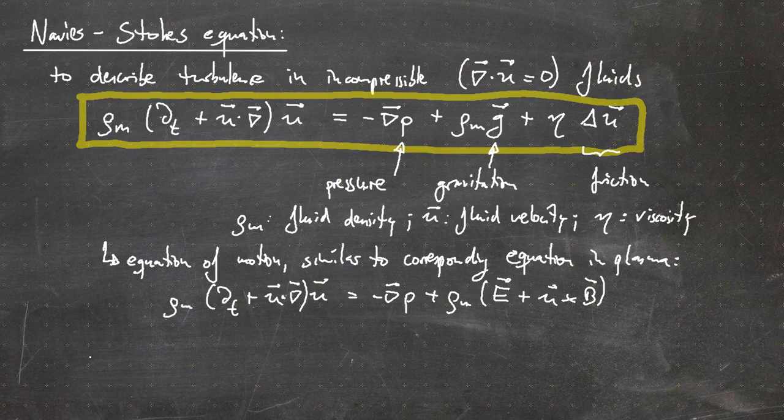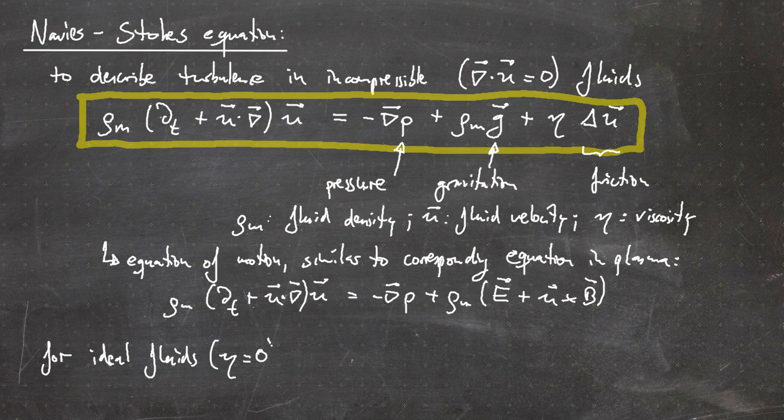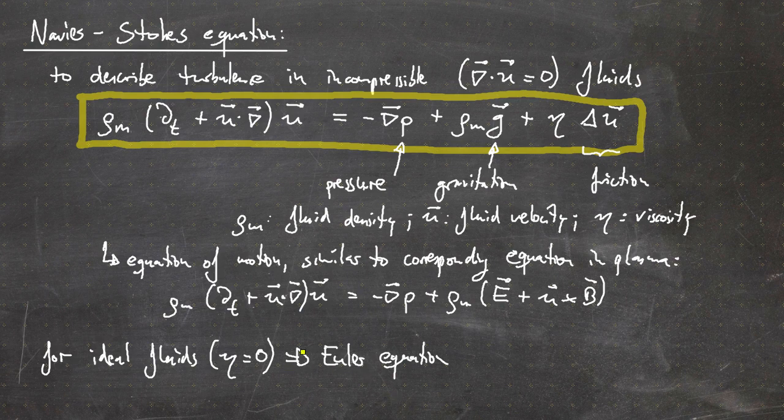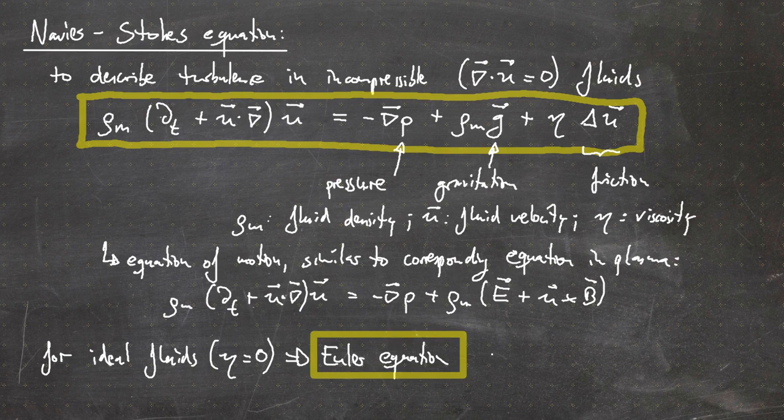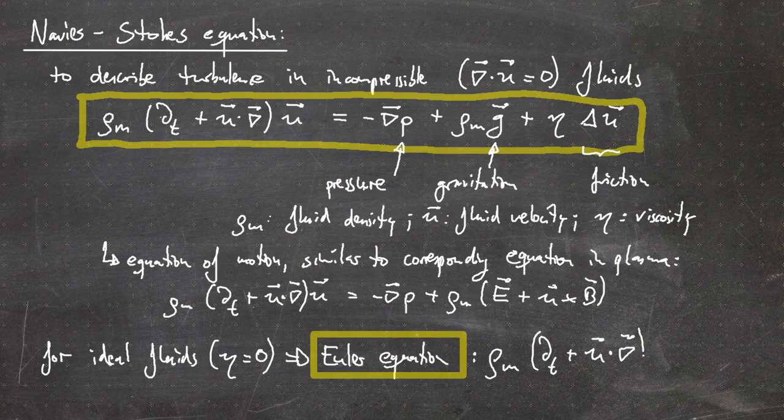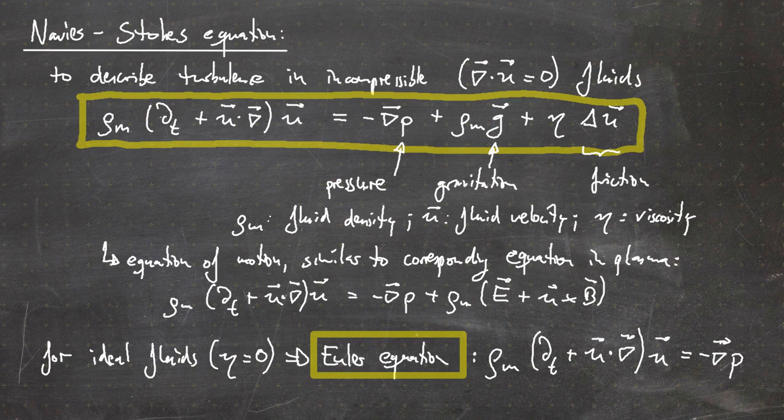An important simplification is if we talk about ideal fluids. For ideal fluids, where η equals zero, we get the Euler equation. The Euler equation is an often-made simplification because you can already study important phenomena using this equation. This then reads: ρₘ(∂/∂t + u·∇)u = -∇p.